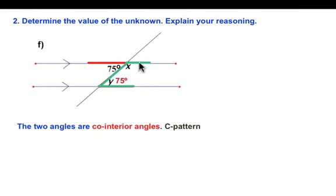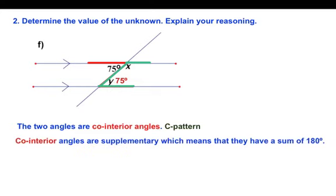And when you see this with two parallel lines and a transversal, this X and Y are co-interior angles. And what that means is that they are supplementary, and so the sum of X and Y is 180 degrees.